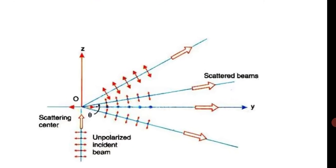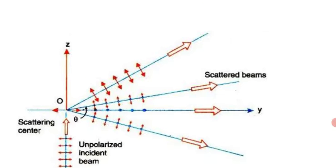If we observe: the first ray has the plane of polarization in the plane of paper, whereas the second ray has both polarized and unpolarized components present. In the third ray, in the direction of Y, we are getting plane polarized light whose plane of polarization is perpendicular to the paper.